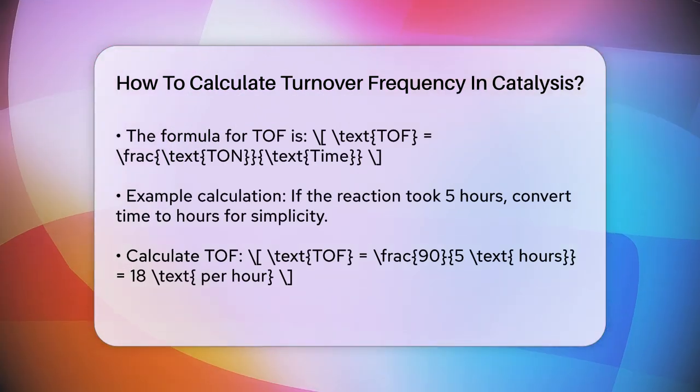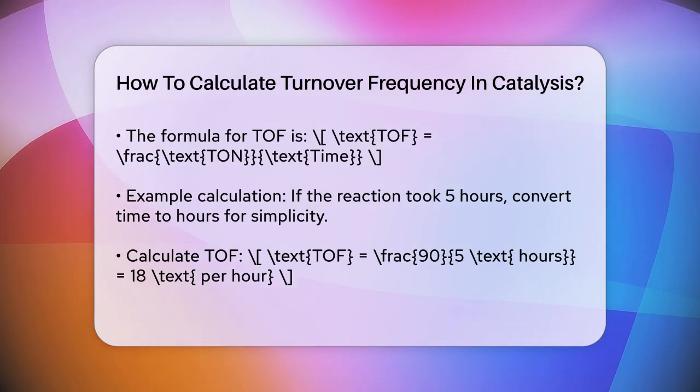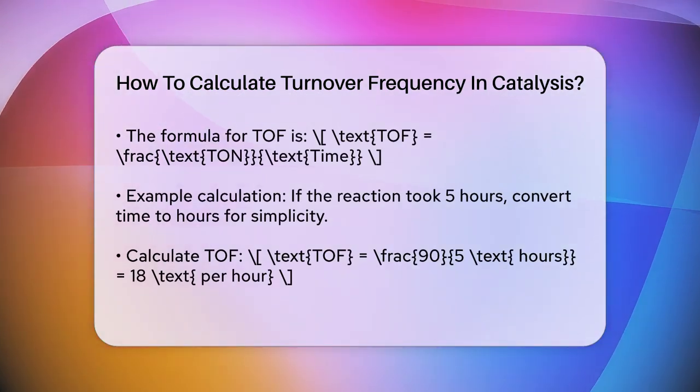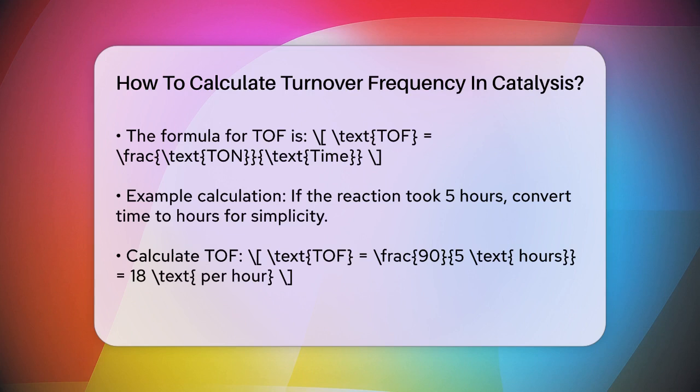If the reaction took 5 hours, you would convert this time into the same units as your TOF, usually seconds or minutes. For simplicity, let's use hours here. 90 divided by 5 hours equals 18 per hour.